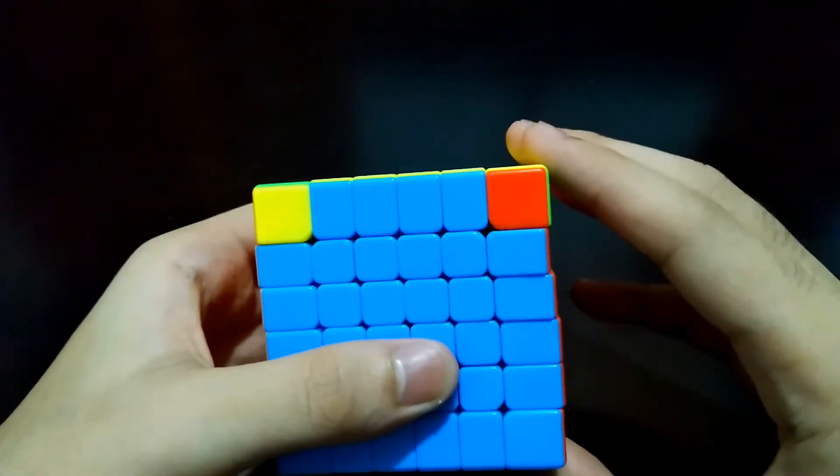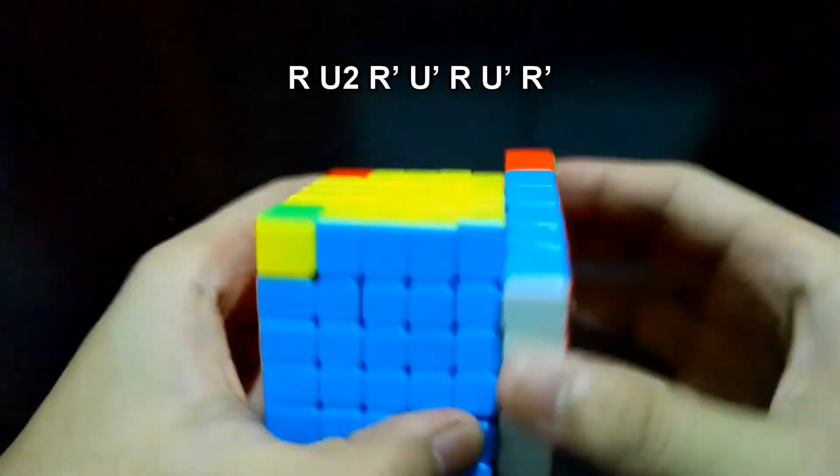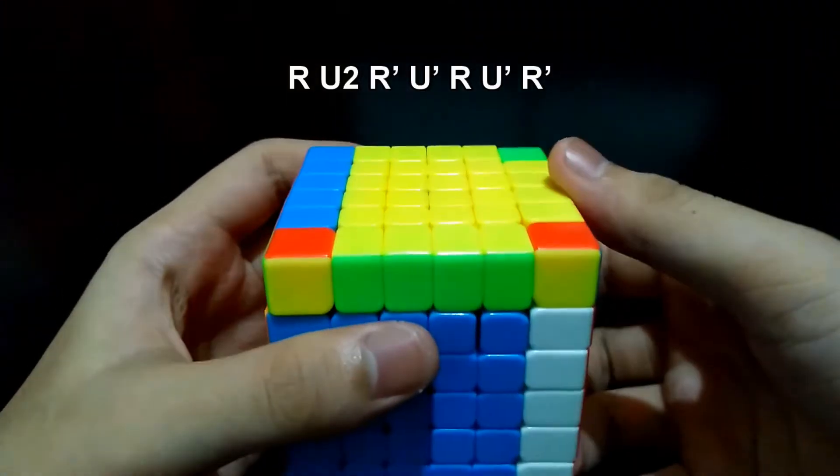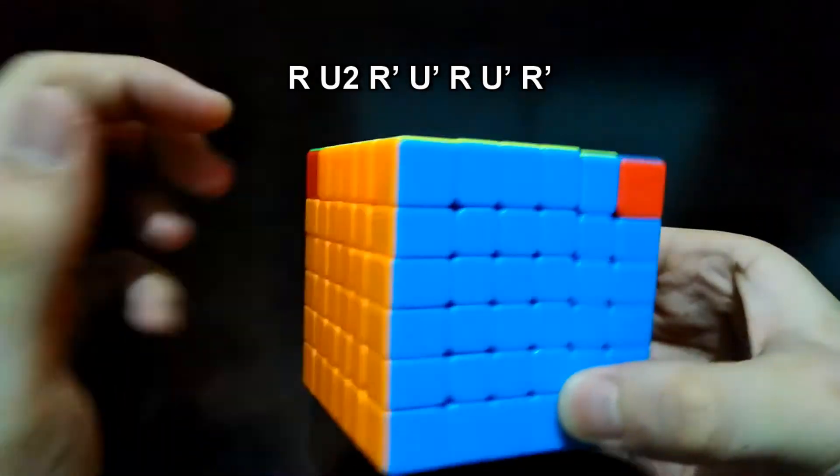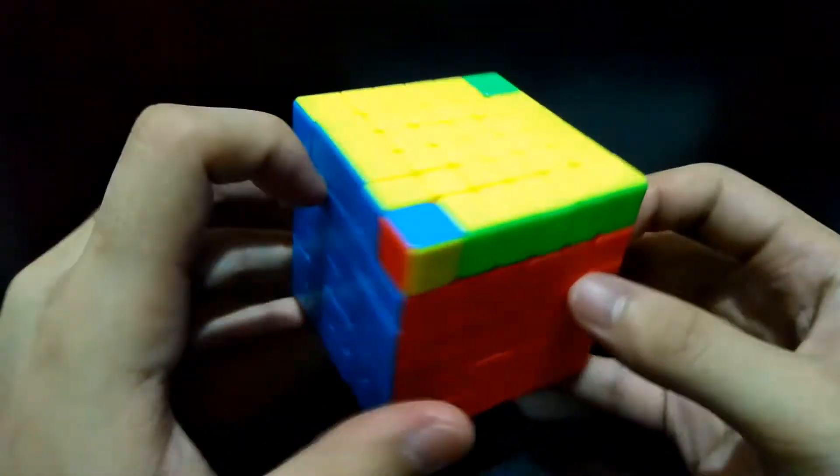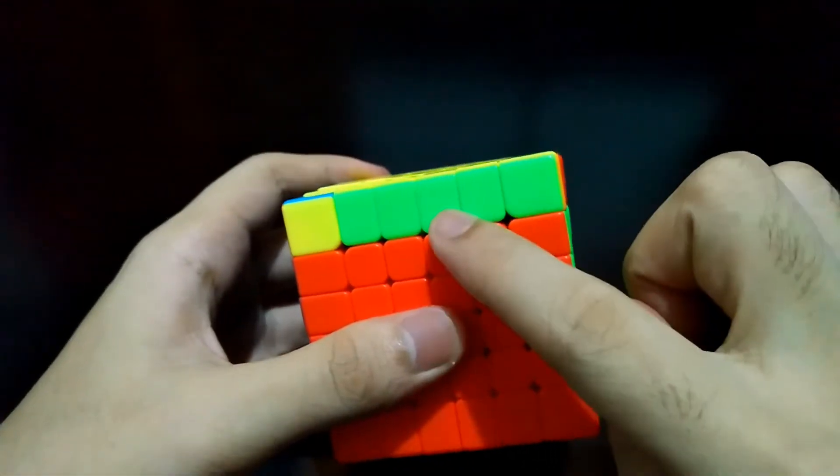Right, Up 180 degrees, Right prime, Up prime, Right, Up prime, and Right prime. Now they are already next to each other. Face the incorrect one at front and the other one right.